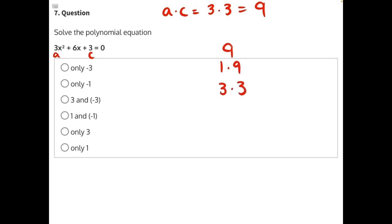Now we need to look at each of these factors and see if adding or subtracting them will give us 6, our b value—the coefficient of our middle term. 1 plus 9 and 1 minus 9 both would not give us 6, so we can't use these. 3 minus 3 would not give us 6, but 3 plus 3 gives us 6, so this is the pair of factors we want to use.